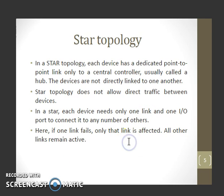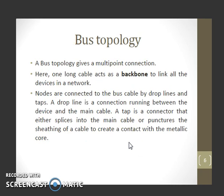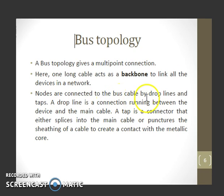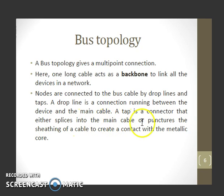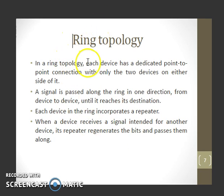Bus topology provides a multipoint connection. One long cable acts as a backbone to link all the devices in the network. Nodes are connected to the bus cable by drop lines and taps. A drop line is a connection running between the device and the main cable. A tap is a connector that either splices into the main cable or punctures the sheathing of the cable to create a contact with the metallic core.